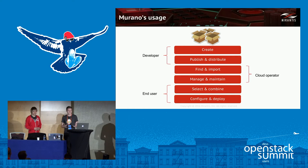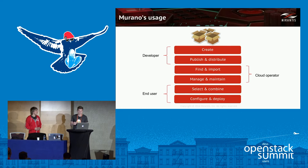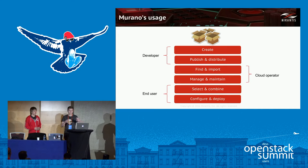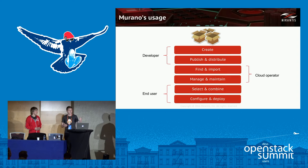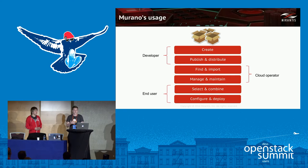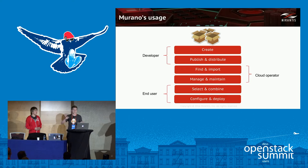Here's how we imagine the application lifecycle stack. In this stack, we see different roles for different catalog users. There are people who develop the apps — who create, publish, and distribute them. Then cloud operators decide which apps go into the catalog for the current cloud, design role-based access, and control what goes in and out. Finally, end users find the apps, compose them into the application stack they need, deploy, and use them.